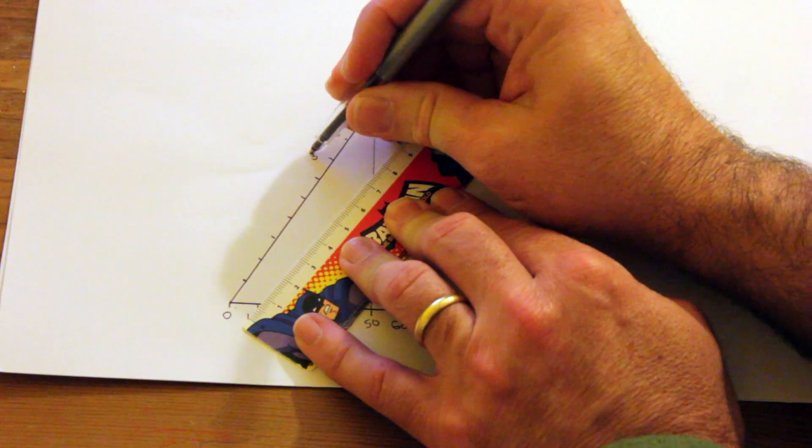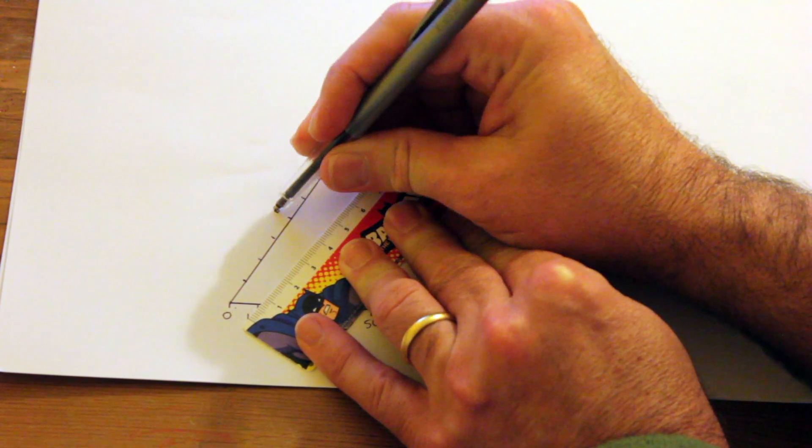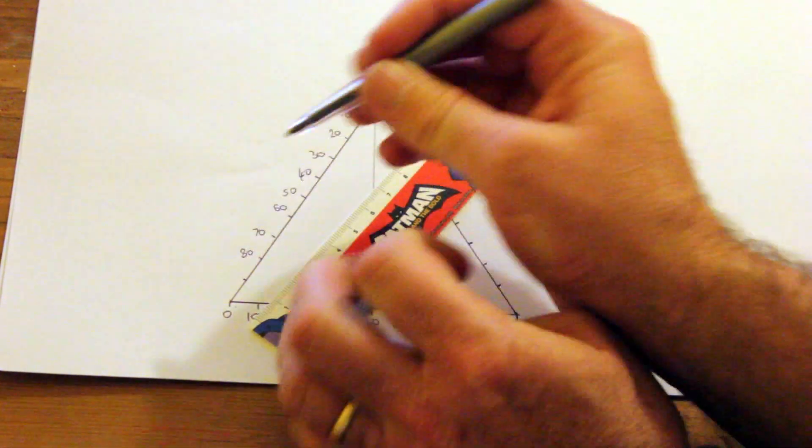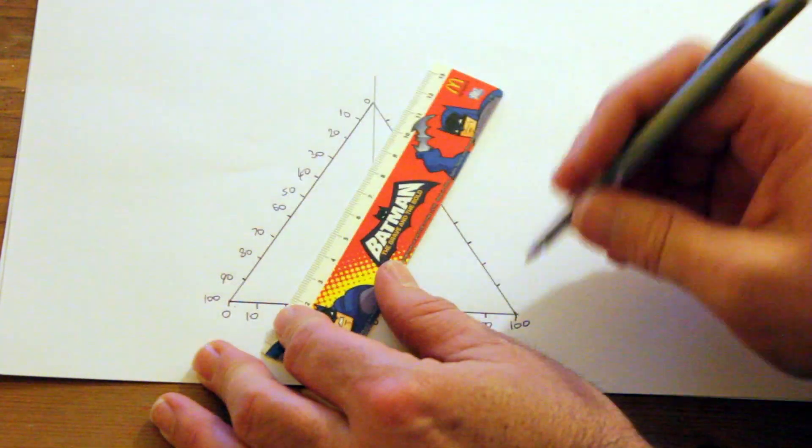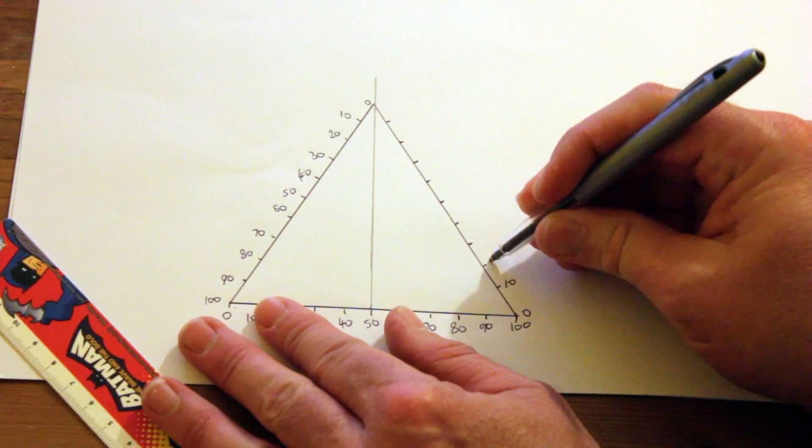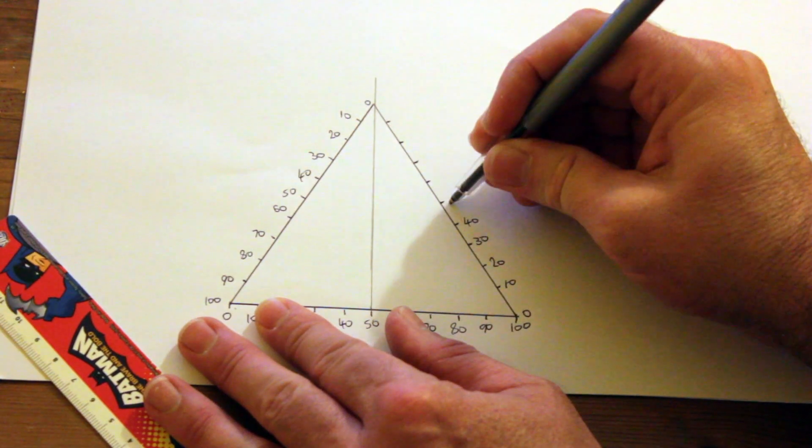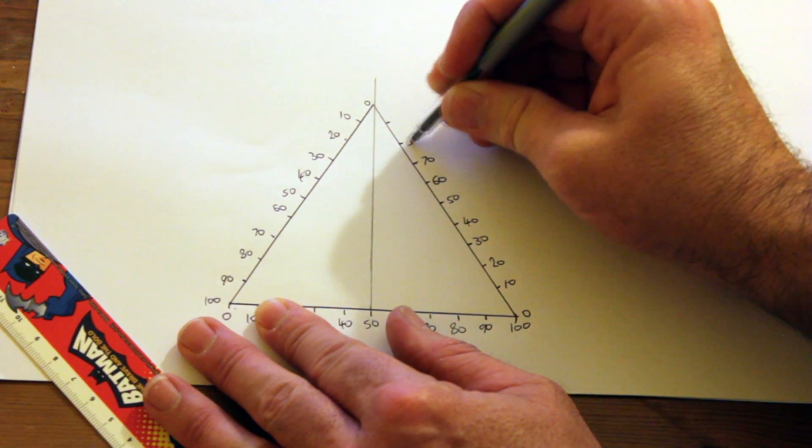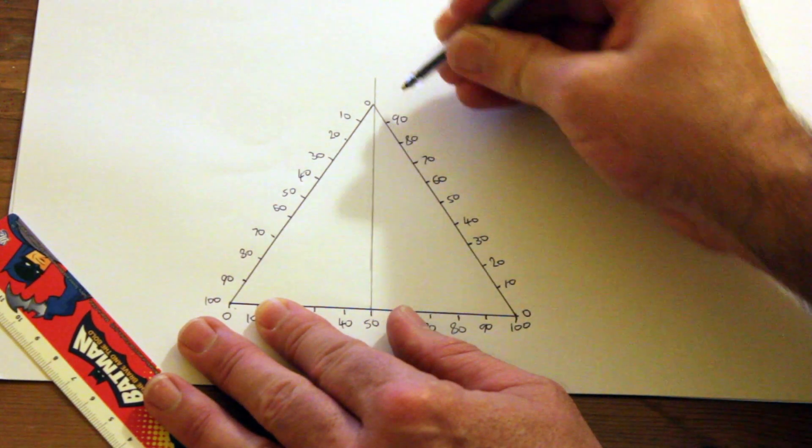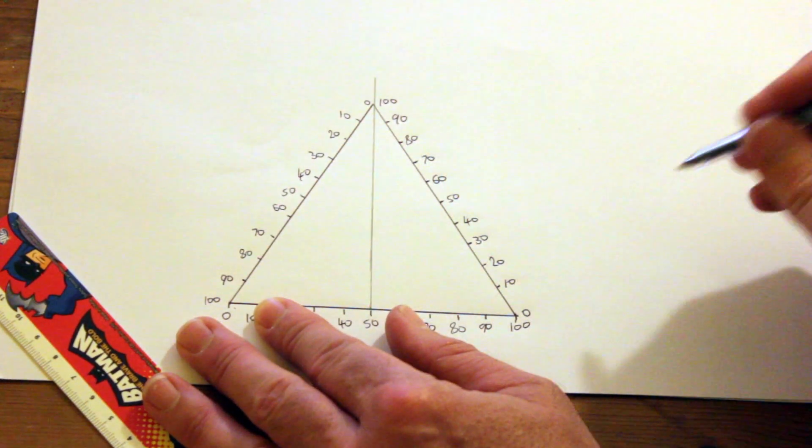I'll mark from 0 to 100 percent in 10 percent increments on both sides of the triangle.